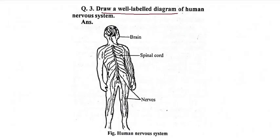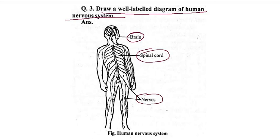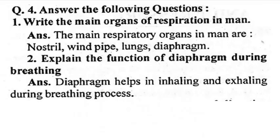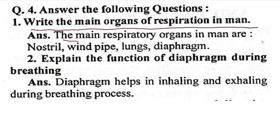Draw a well-labelled diagram of the human nervous system. First there is the brain, then the spinal cord, and the nerves connect throughout the entire body. Write the main organs of the respiratory system in man: nostril, windpipe, lung, and diaphragm.